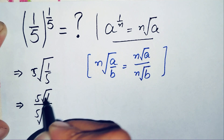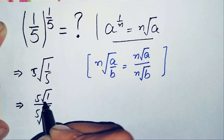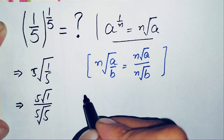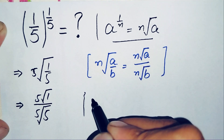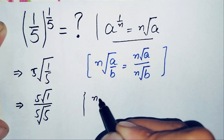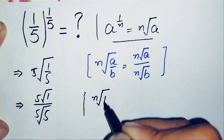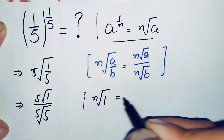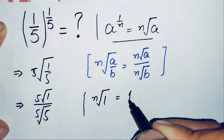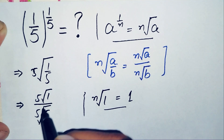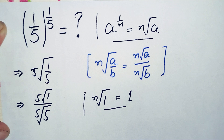Now we know that any root of the number 1 is always 1. So here we replace the fifth root of 1 with 1, and the equation becomes 1 divided by the fifth root of 5.